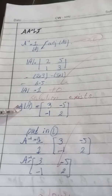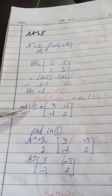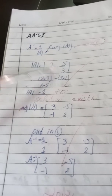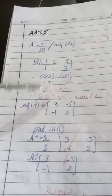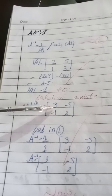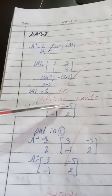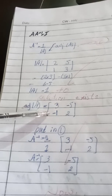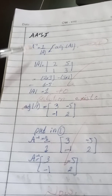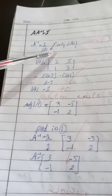Since the determinant is not zero, the given matrix A is not singular — if it were singular, the solution would not exist. Next we calculate the adjoint of A, which is found by interchanging the principal diagonal entries and changing the signs of the other entries. Adjoint of A is [3, -5, -1, 2].